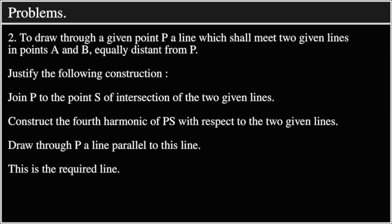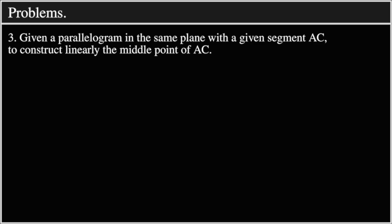Construct the fourth harmonic of PS with respect to the two given lines. Draw through P a line parallel to this line. This is the required line.